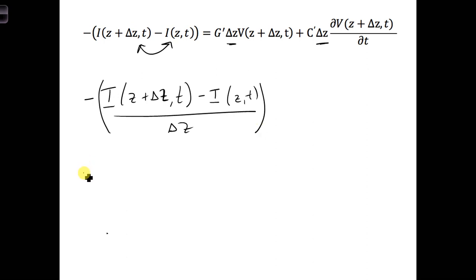What if we were to take the limit where delta Z goes to zero? This is the limit where each transmission line segment becomes infinitesimally short. Then we can write the left side as a partial derivative with respect to space.